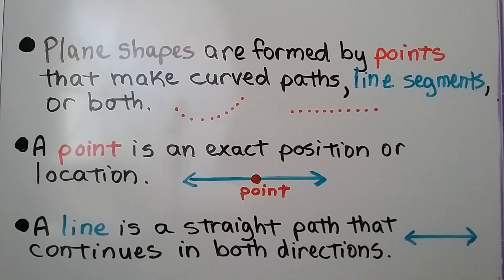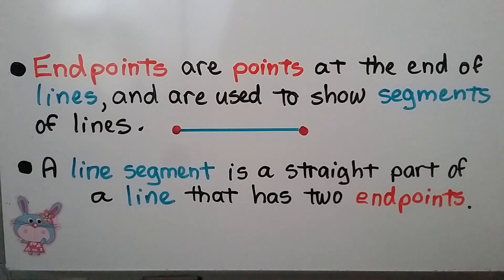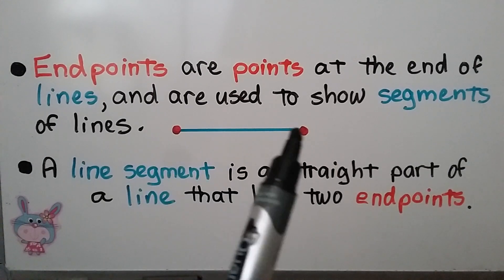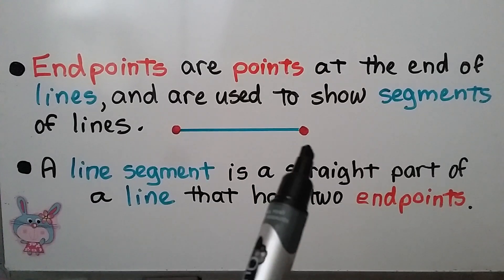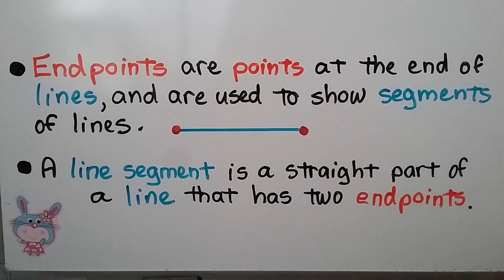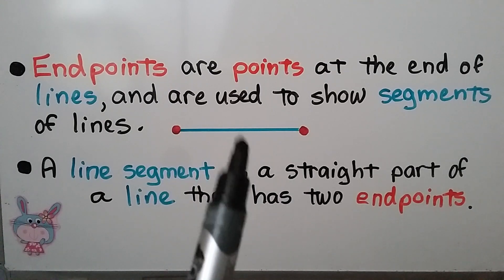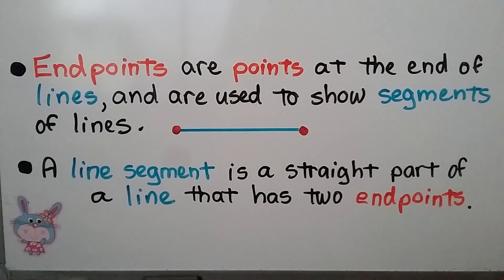A line is a straight path that continues in both directions — that's why it has an arrow on each side. Endpoints are points at the end of lines and are used to show segments of lines. So this has an endpoint here and an endpoint here. A line segment is a straight part of a line that has two endpoints. It's not a full line because it doesn't have an arrow on each side; it's just a little part of a line.